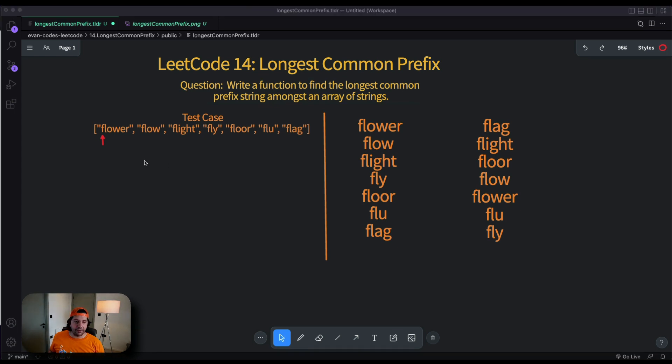Let's take it from the beginning. So what is a prefix? A prefix is a part of one word. For example in the word flower, a prefix can be F, a prefix can be FL, a prefix can be FLO and etc.